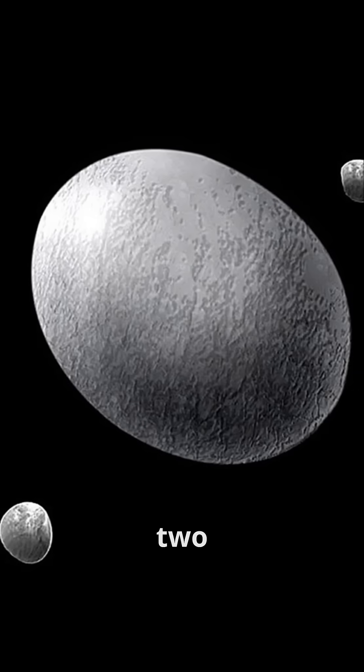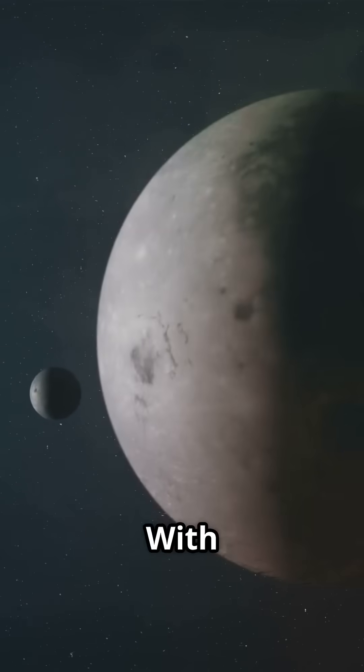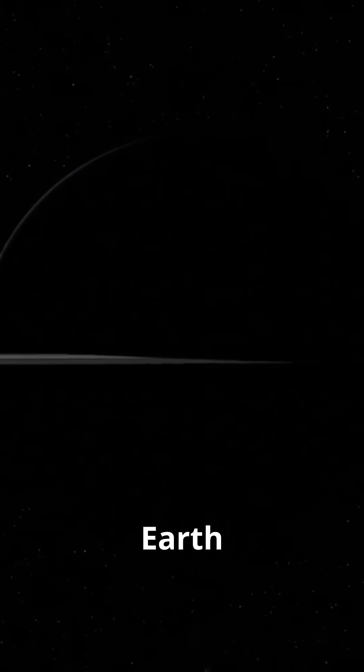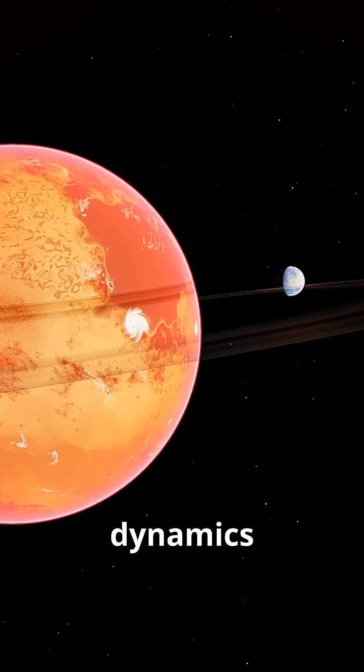Haumea also has two moons, Haichiaka and Namaka, adding even more intrigue to this icy world. With an orbit taking 285 Earth years, Haumea offers incredible insights into planetary formation and the dynamics of distant objects.